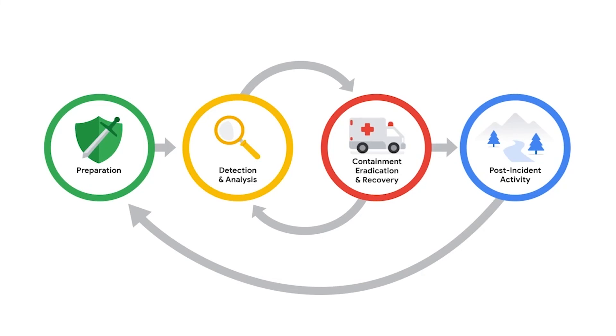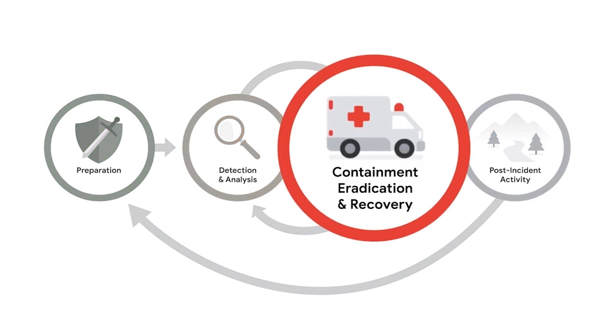By adding context, you avoid making assumptions which can result in incomplete or incorrect conclusions. Now that we've covered how to triage alerts, we're ready to discuss how to respond and recover from an incident. In this video, we'll discuss the third phase of the incident response life cycle. This phase includes the steps for how security teams contain, eradicate, and recover from an incident. It's important to note that these steps interrelate.